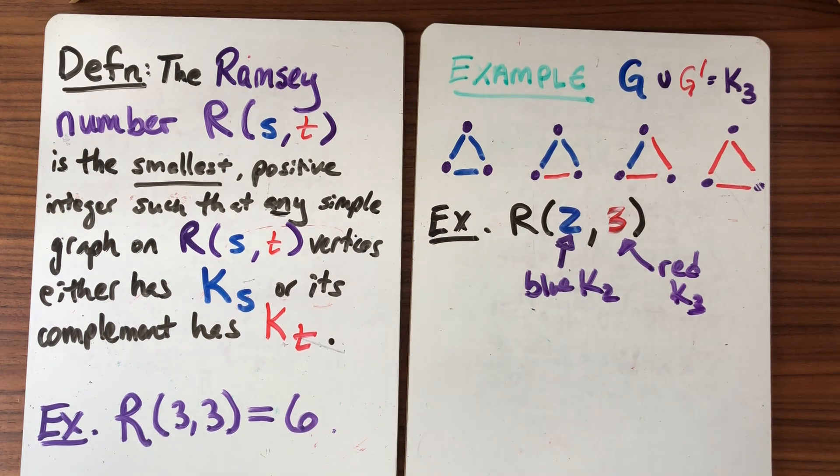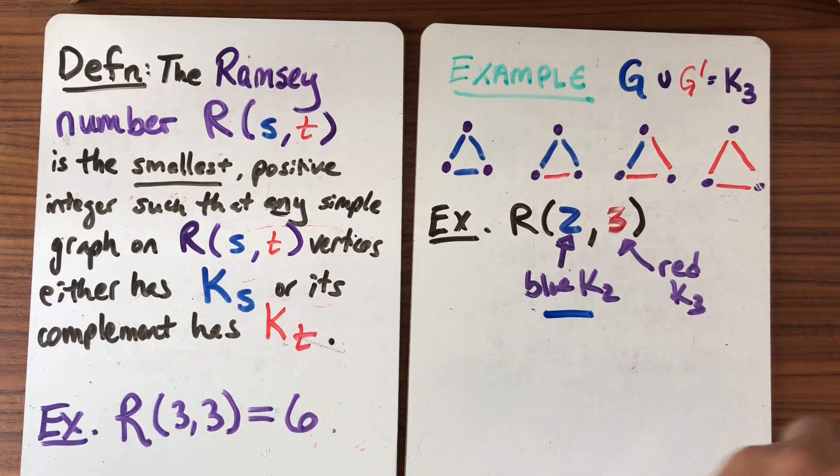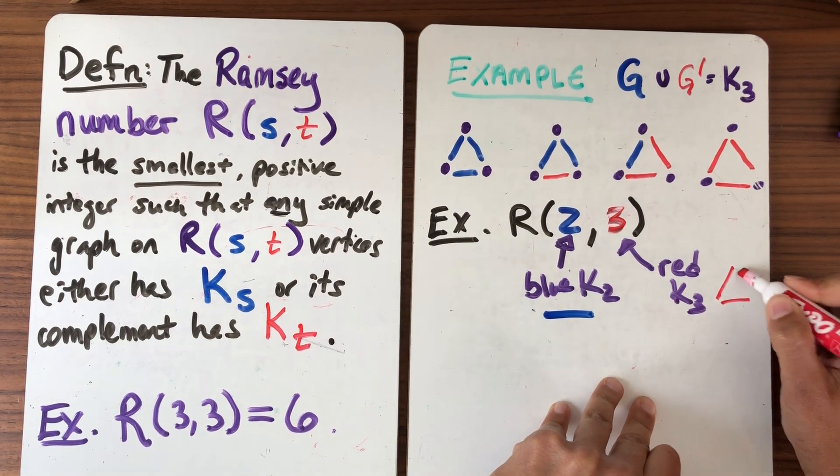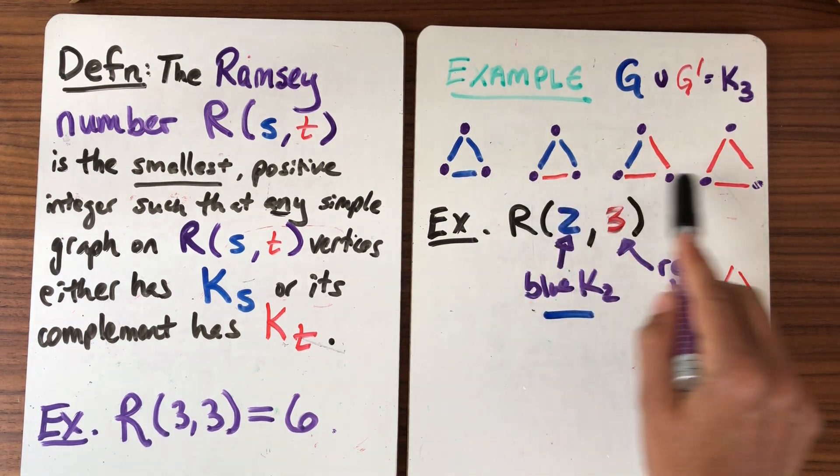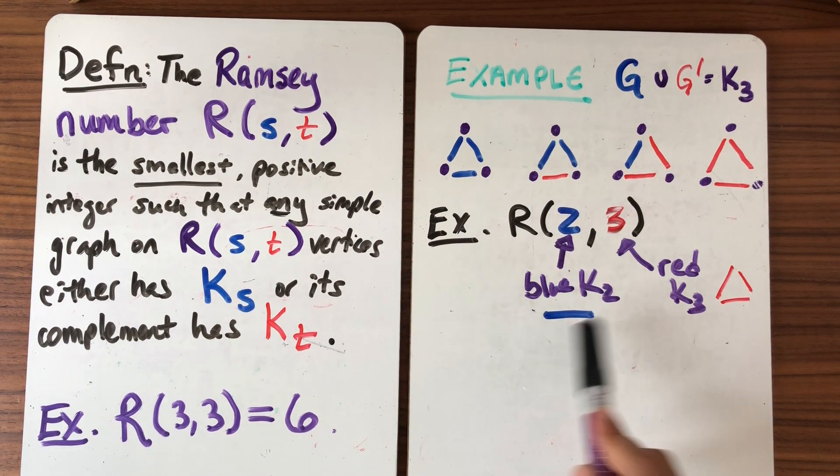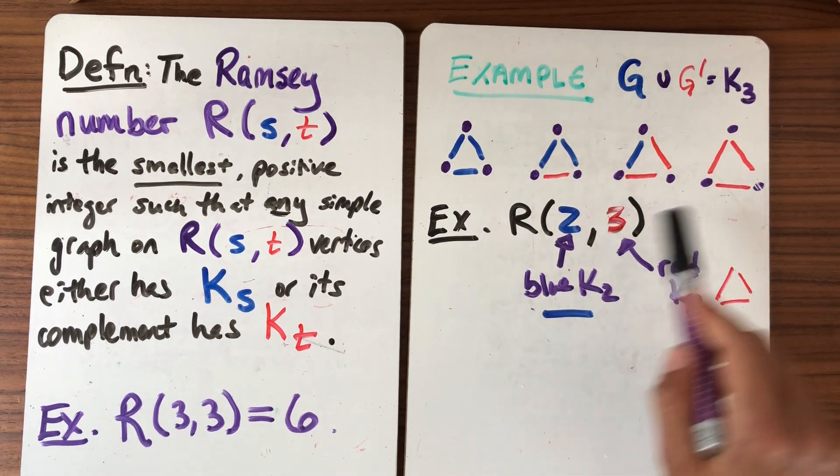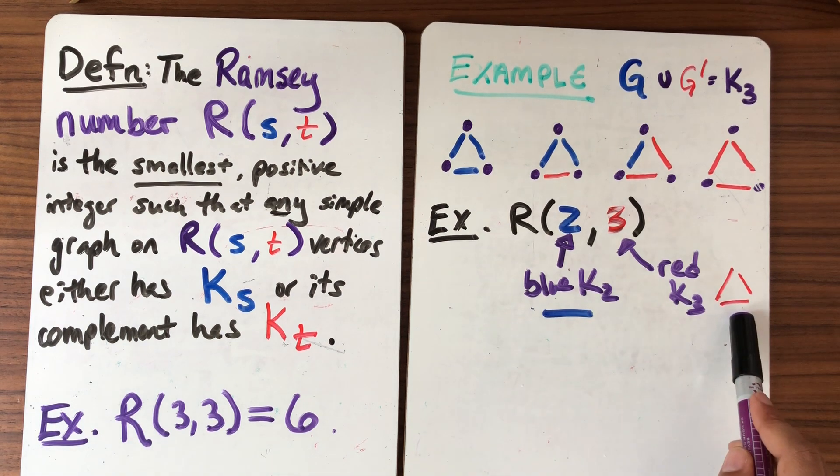So here I'm gonna look and I'm gonna say okay do I have a blue K_2? Well what's a blue K_2? It's a line. And what's a red K_3? Well that's a triangle. So I have to ask myself in every one of these examples do I either have a blue line or a red triangle. Yes, yes, yes, yes. In every one of these examples I either have a blue line or a red triangle.